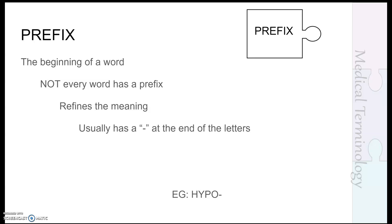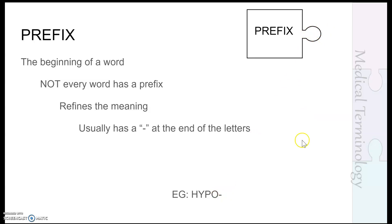Now let's look at prefixes. We've covered root terms — which give main meanings — and suffixes, which are endings always found at the end of a word. A prefix, as you can see in the puzzle piece, comes at the beginning of the word. Not every word has a prefix, but most words have a root term and almost every word has a suffix — there's only one suffix per word. When a prefix is present, it refines or additionally defines the meaning. In the textbook or word list, a prefix is identified by a dash at the end of the letters. For example, 'hypo-' has a little dash at the end.